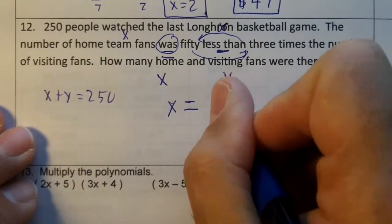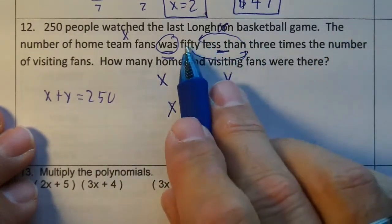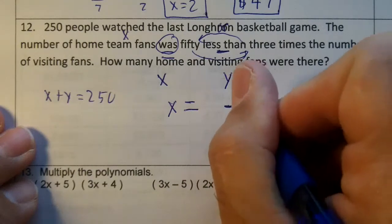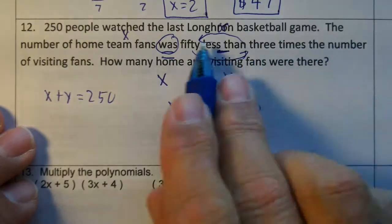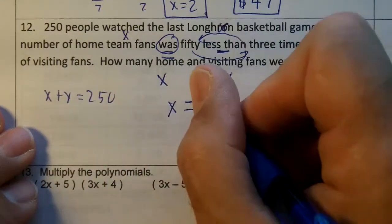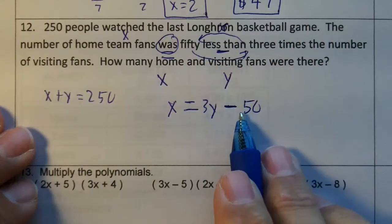Now then, less than means subtract, and you have to flip. So the 50 goes after the minus, and then three times the number of visiting fans, which is Y. So 3Y minus 50.